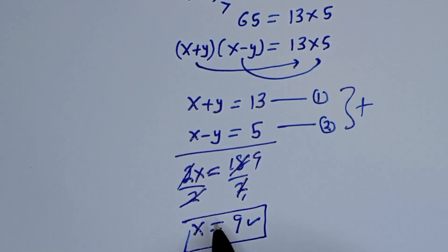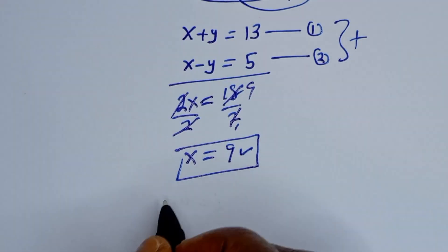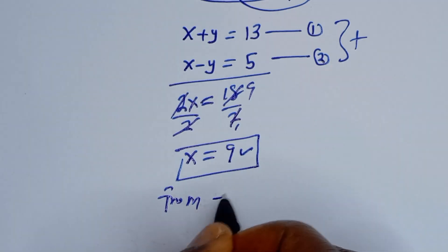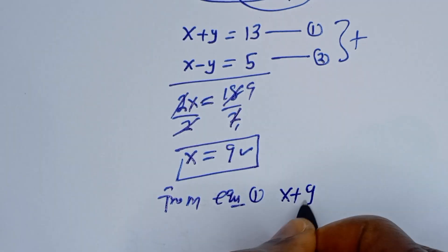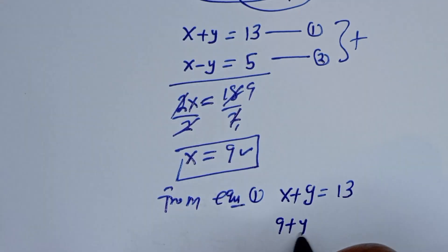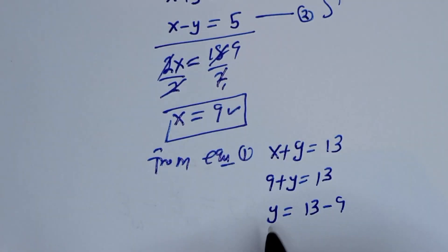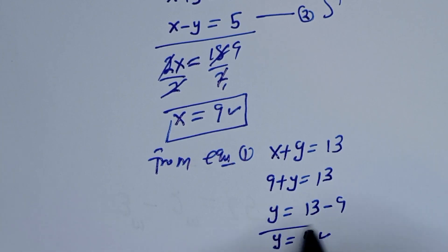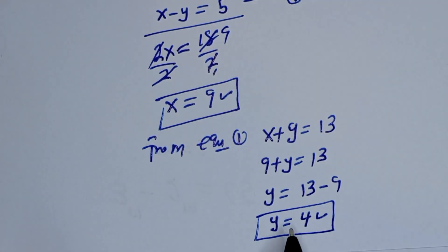Now let's solve for y using equation 1. x plus y is equal to 13. When x is equal to 9, we have 9 plus y is equal to 13. Then y is equal to 13 minus 9, so y is equal to 4. We've gotten the value of x as well as the value of y.